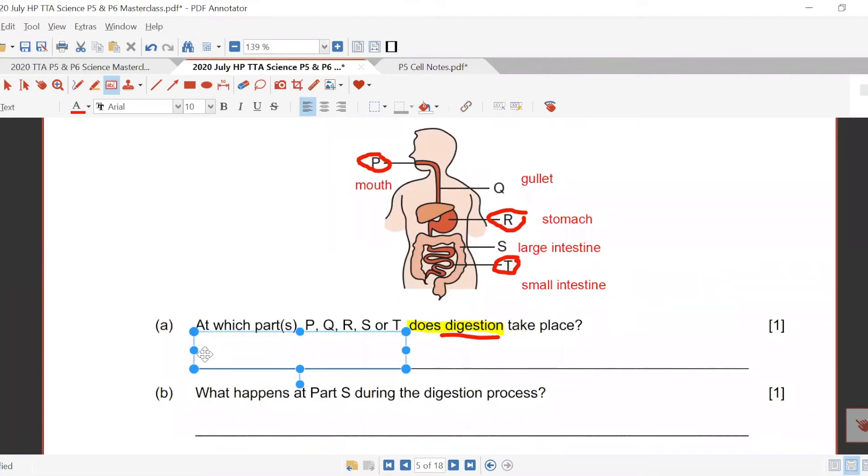So where has my digestive juices? In my mouth, my stomach, and my small intestine. You are right, P R T.